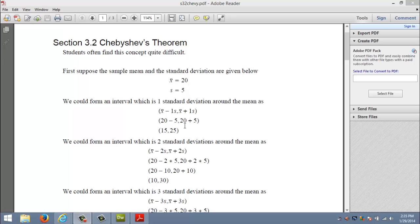I go from 20, up by 5 and down by 5, and so that range of 15 to 25 is what we call one standard deviation around the mean.